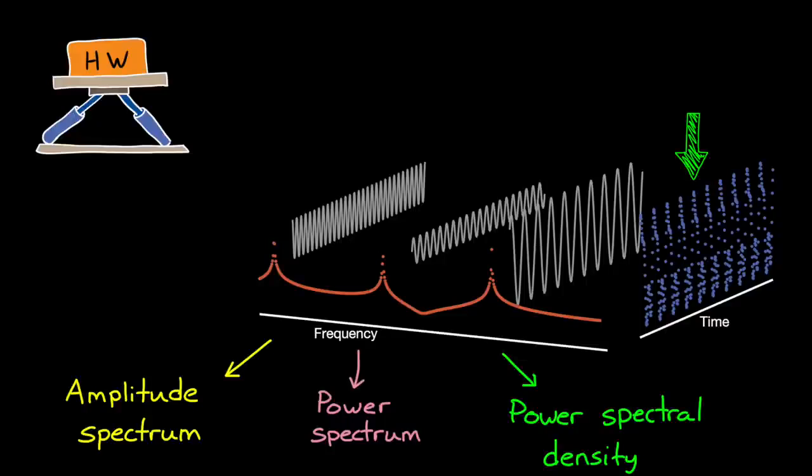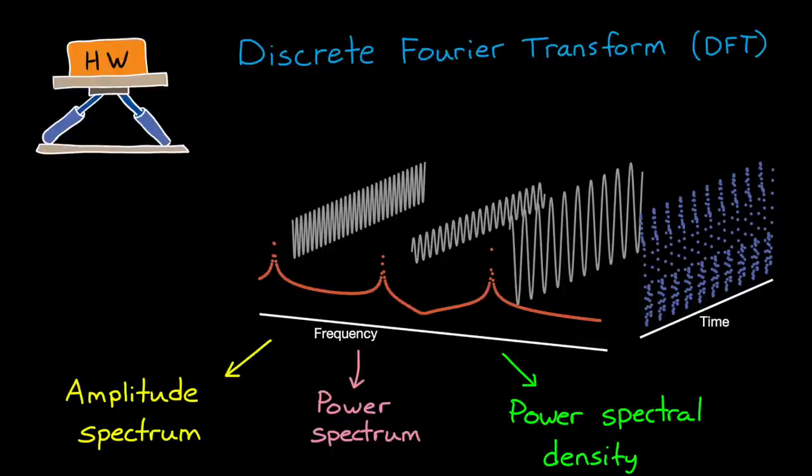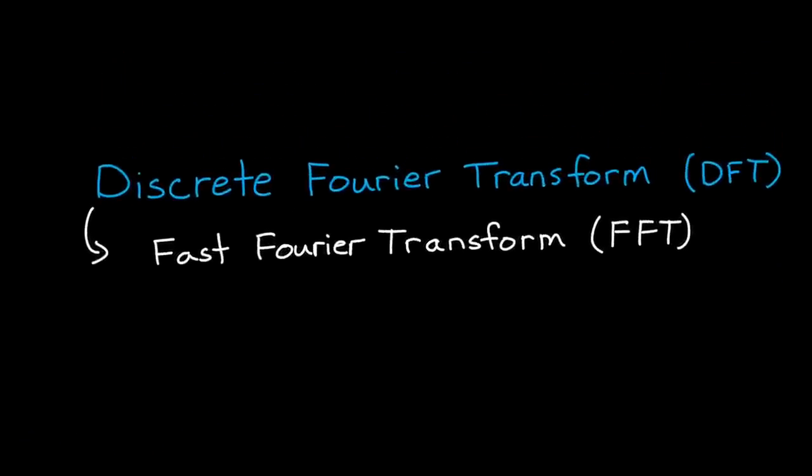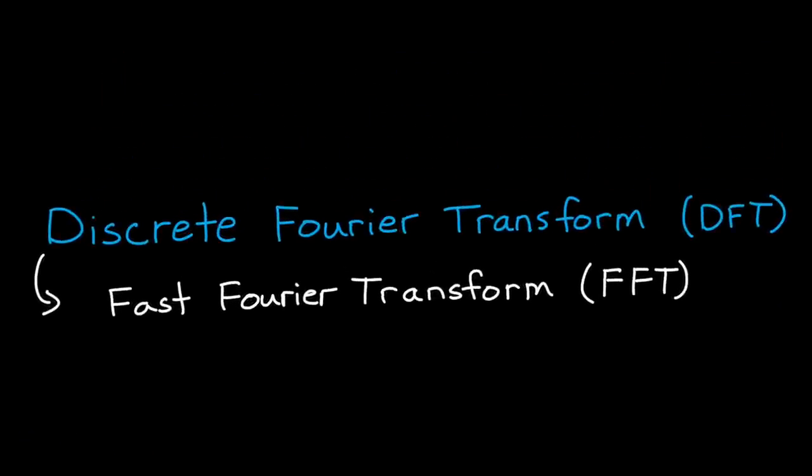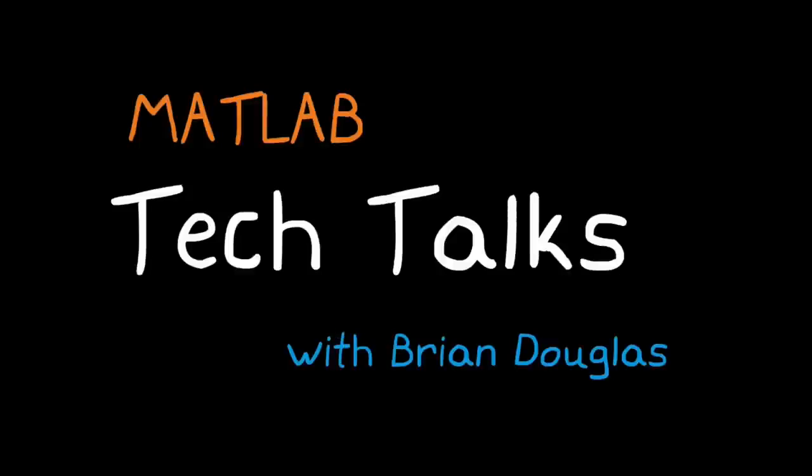Now with finite discrete data, like we have here, the first step to getting to any one of these representations is the discrete Fourier transform, or DFT. And the most efficient way to compute the DFT is using a fast Fourier transform algorithm, or FFT. And so for this video, what I want to do is answer a few common questions that you might have regarding the DFT and the FFT. I think it's going to be pretty interesting and useful, so I hope you stick around for it. I'm Brian, and welcome to a MATLAB Tech Talk.